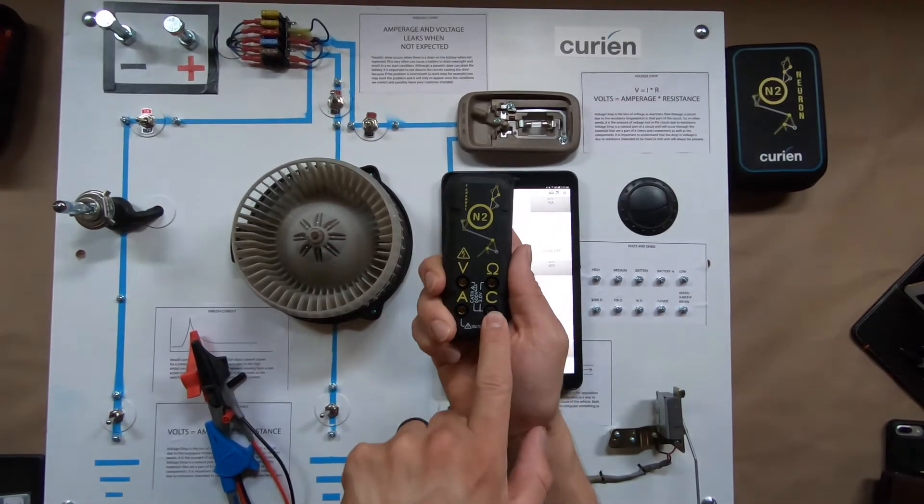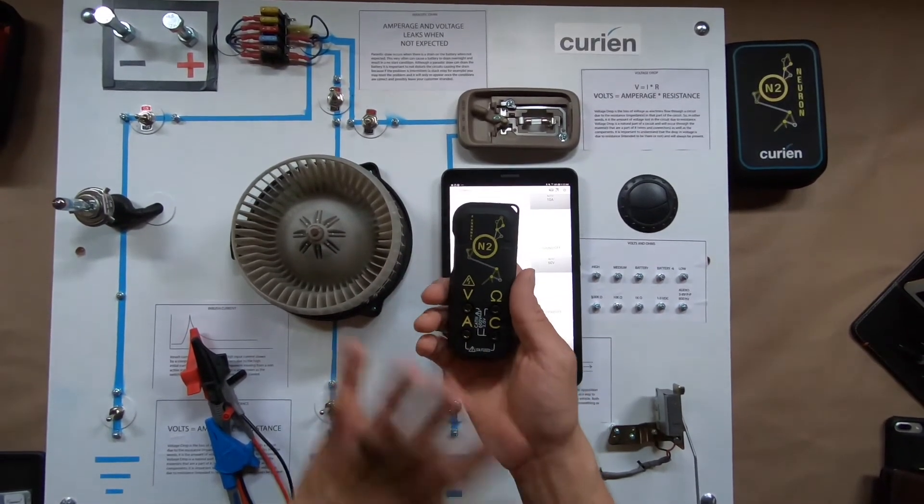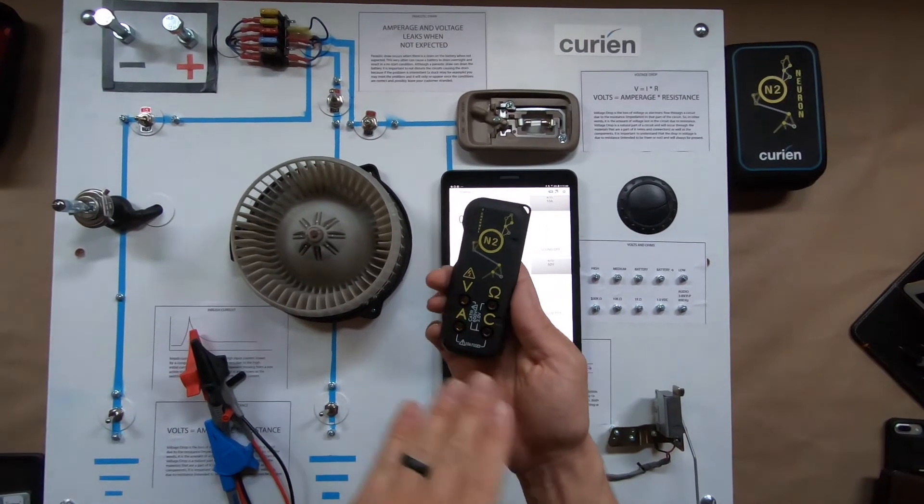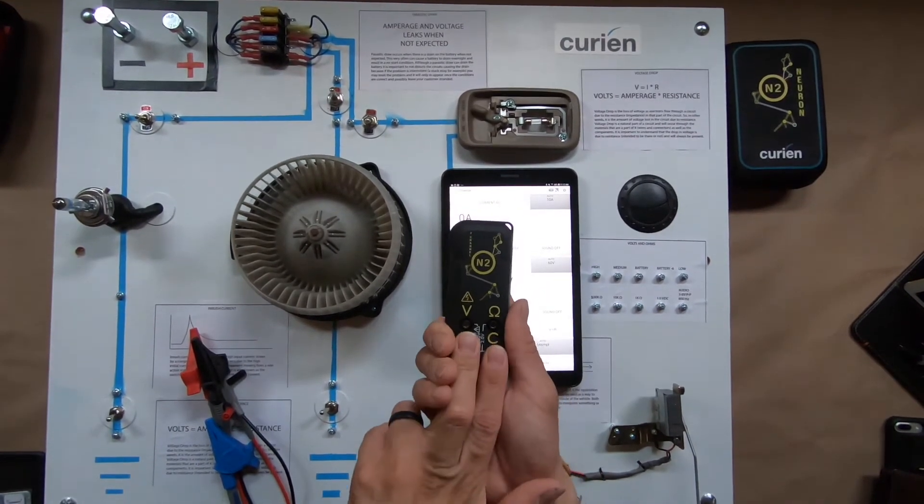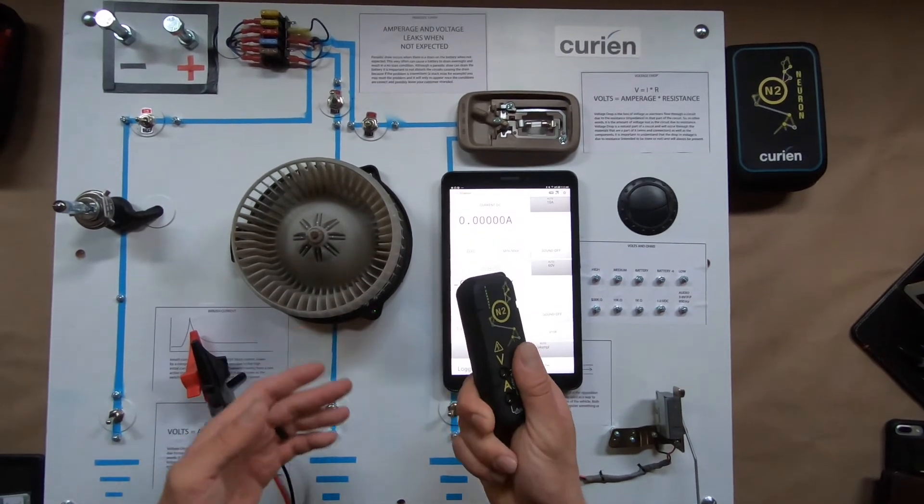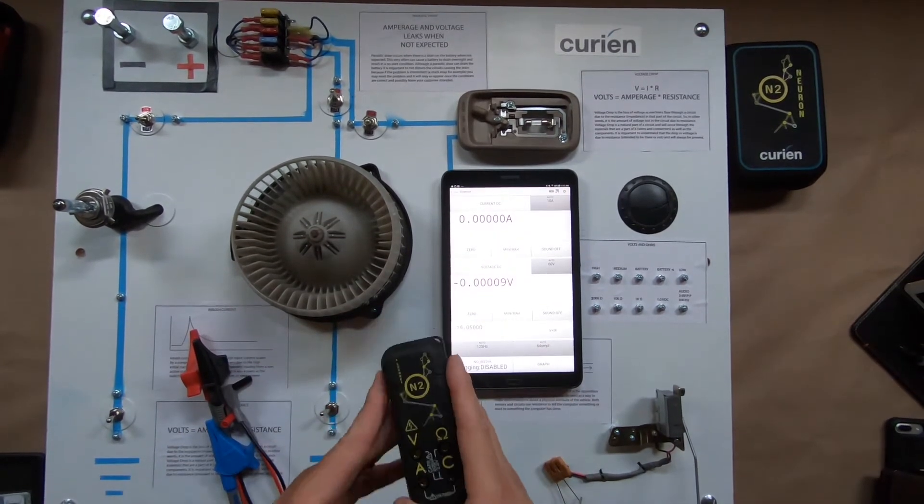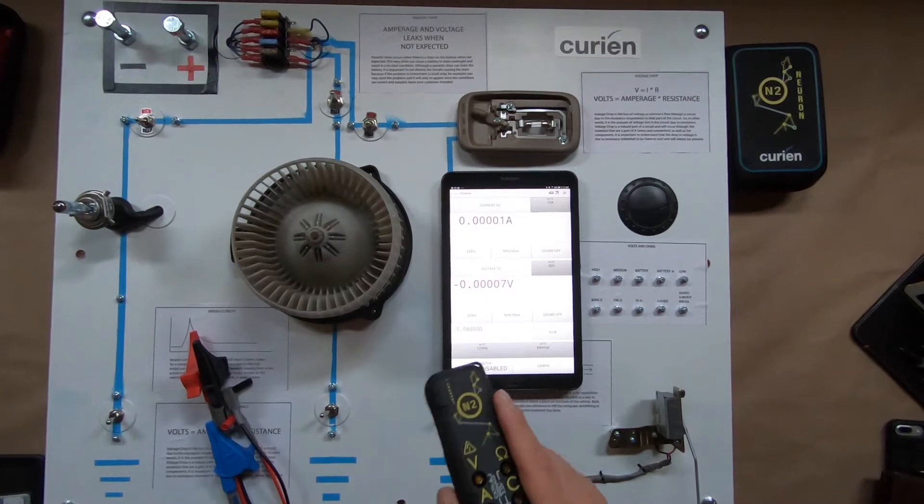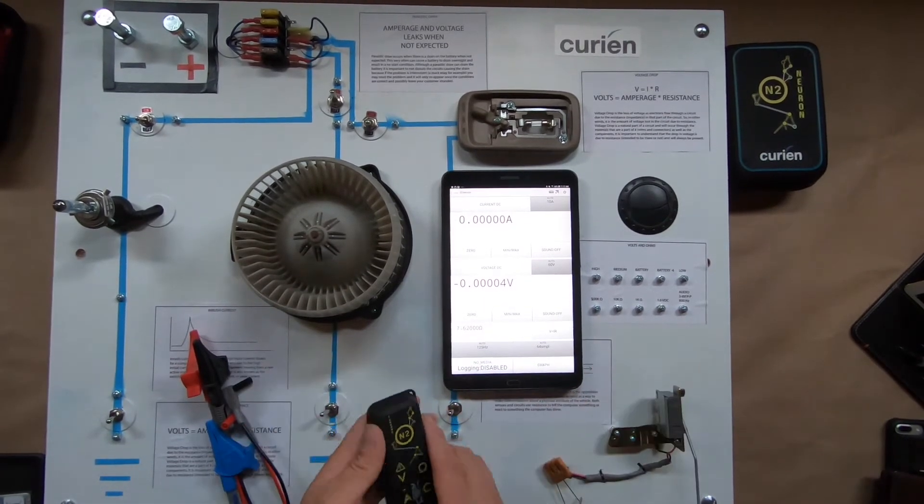Currently between common and amp, you have, just as your standard multimeters would, a fused 10 amp circuit where you can actually put current through the tool and we will measure it for you. But because of the uniqueness of the N2, we have the ability to do calculated amperage testing, and we'll go through all of that today.